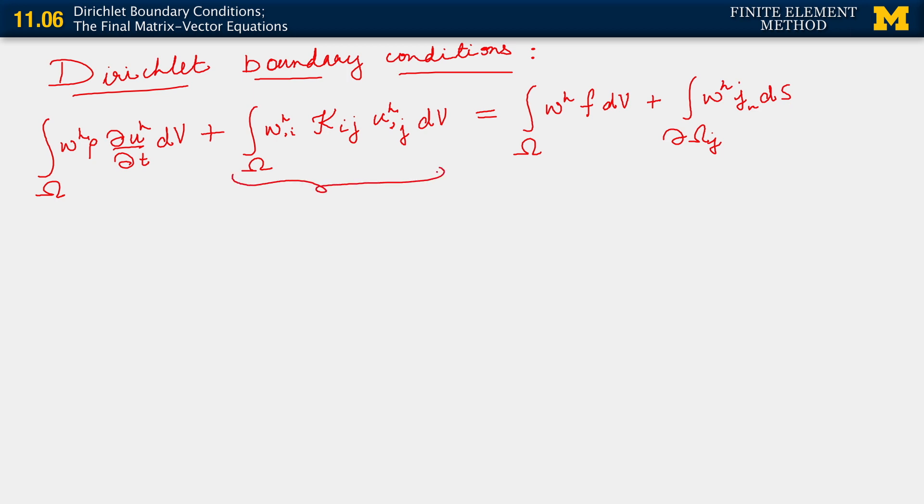This equals integral over omega w h f dv plus integral over the influx boundary w h j n ds. Now, we've already written out the matrix vector form coming from the second term on the left-hand side and the two terms on the right-hand side. And we know very well that after accounting for Dirichlet conditions on those terms.